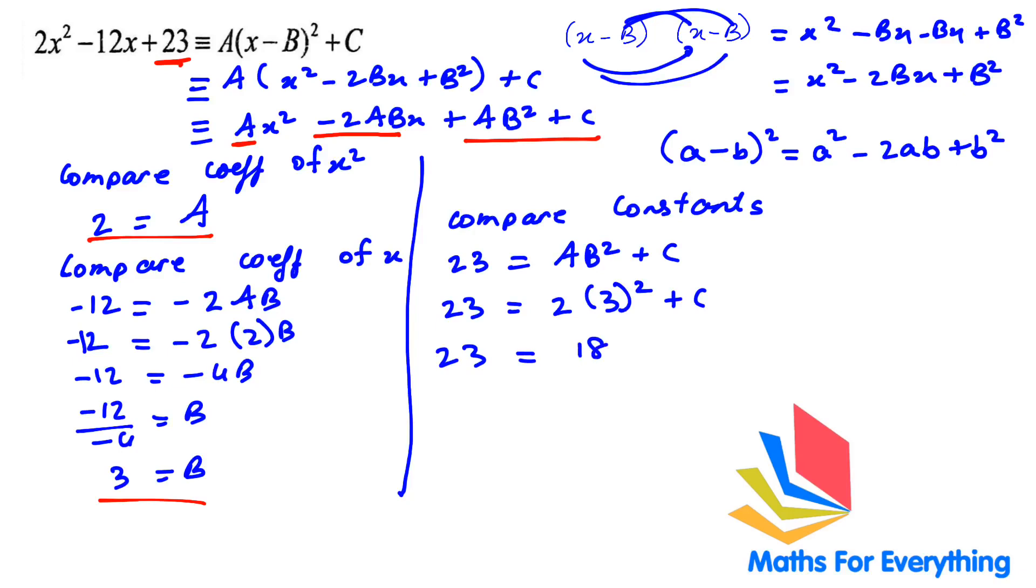This will give us 18 + c. So 23 - 18 is c. 5 is equal to c.